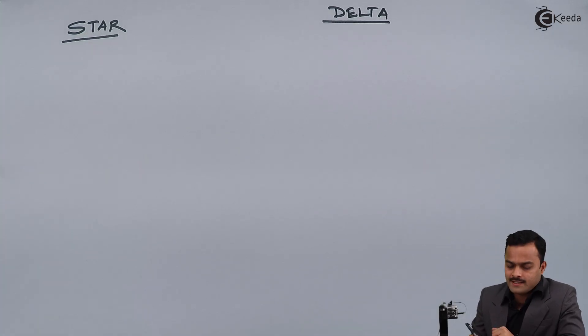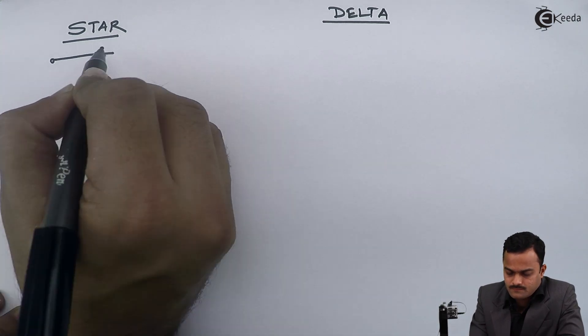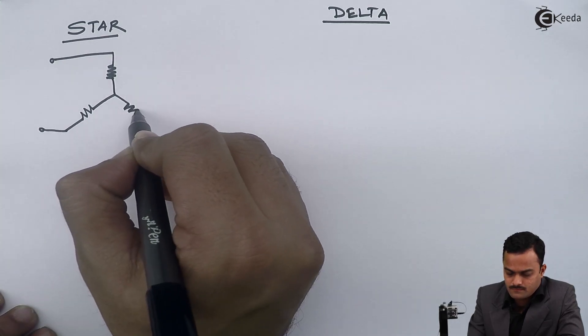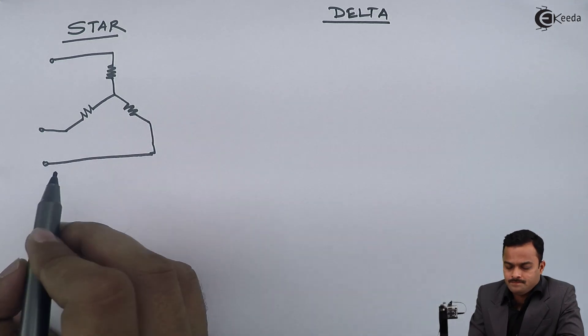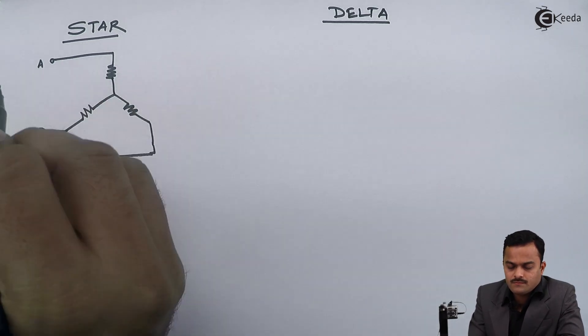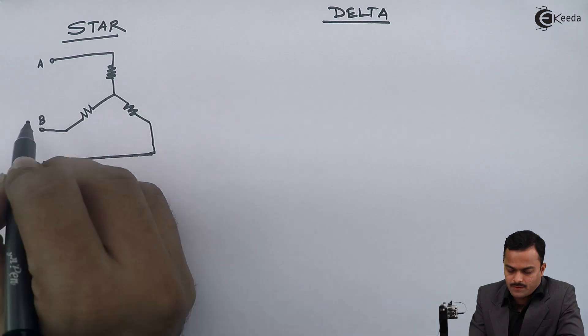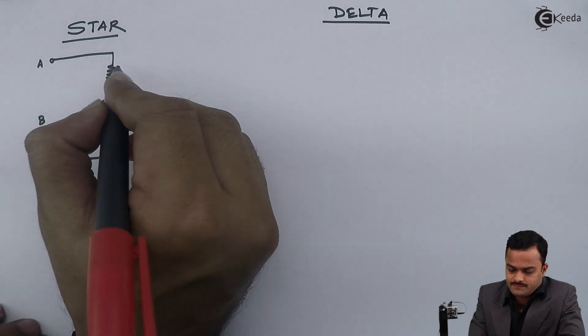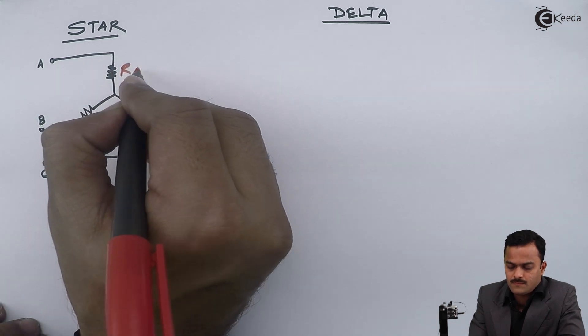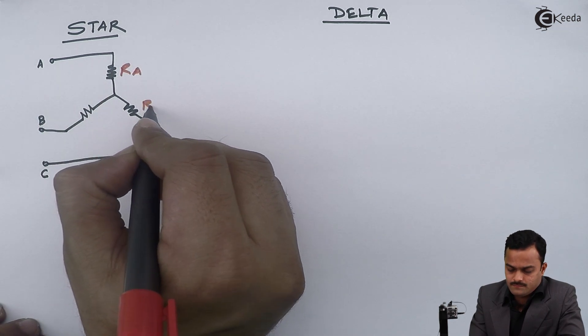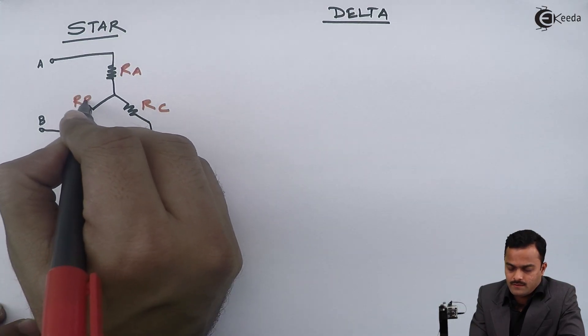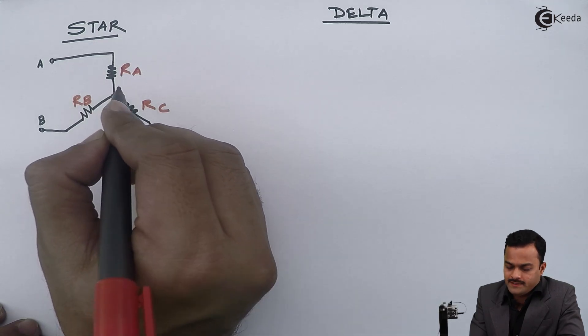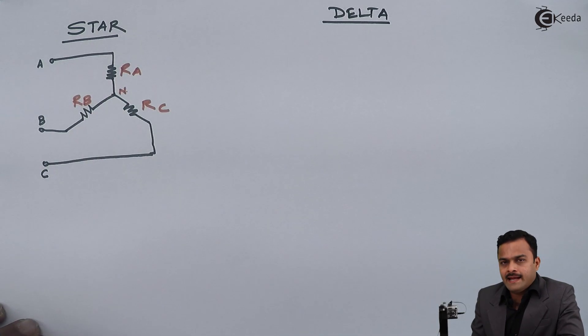So star will look like this. I will name this as A, B, C and I will name the resistors RA, RC and RB, and here I am getting one more point which I will name as N.